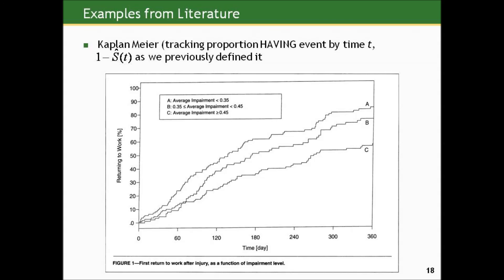You can see there's visual evidence that those with greater impairment take longer to return to work, because the cumulative proportion going back to work in group C is a lot lower in the one-year follow-up period than those in the other two groups. They don't show the p-value in the graph, but this difference was statistically significant as well.